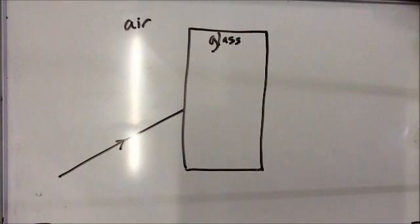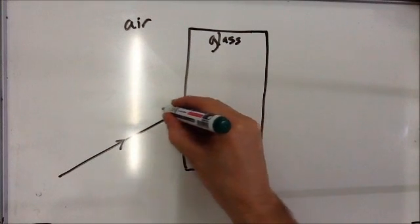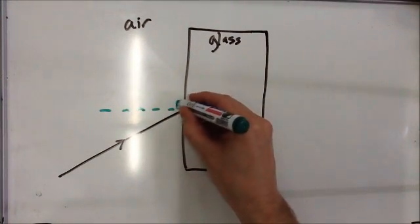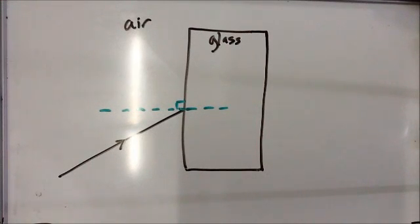Now what's going to happen is when this light enters the glass block, because it's not entering along the normal, which is always drawn at a right angle to the point of contact, it's going to refract, it's going to change direction.